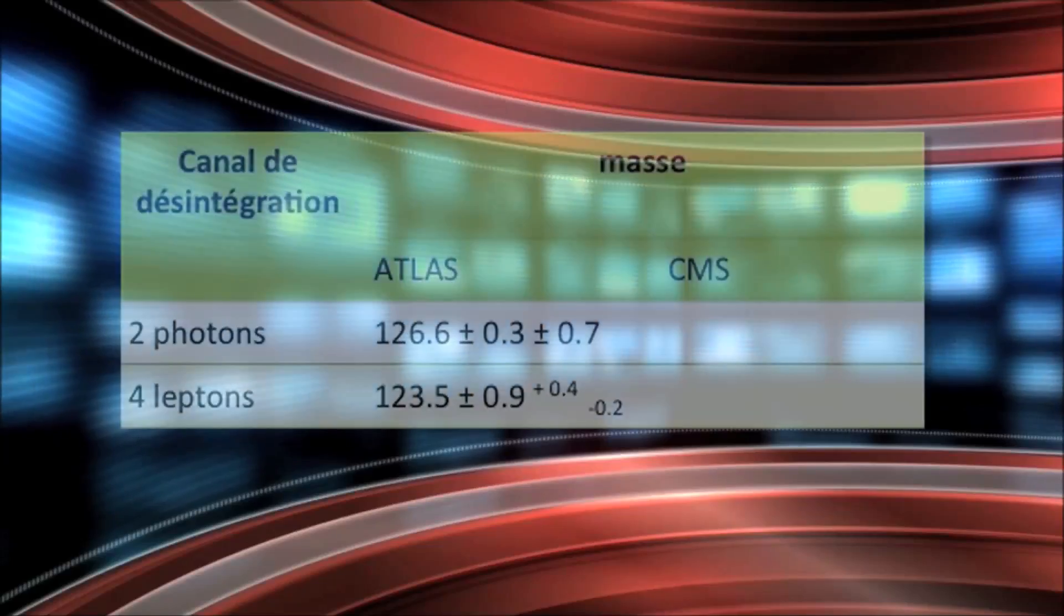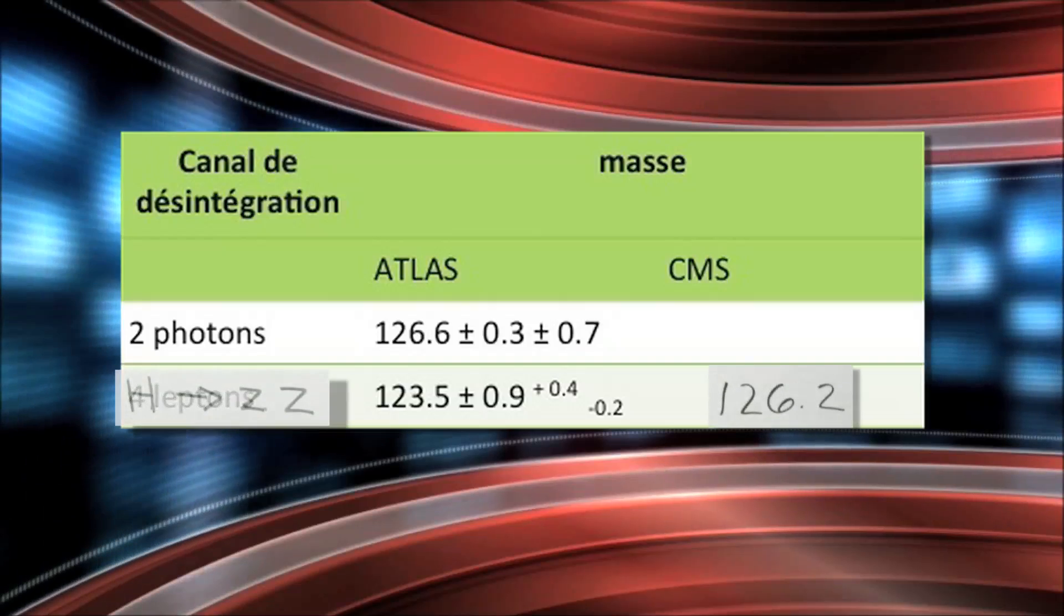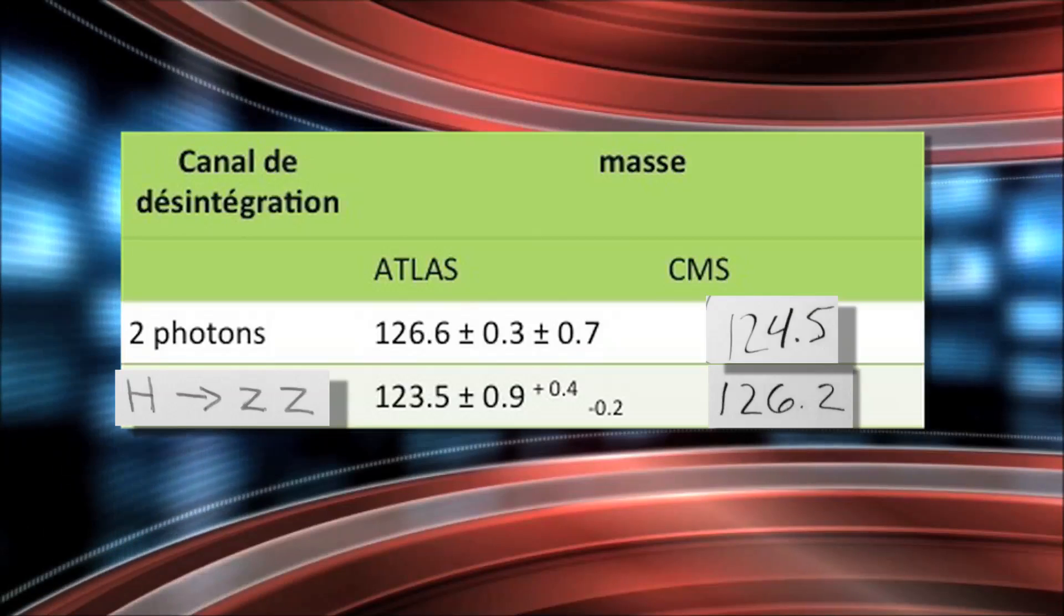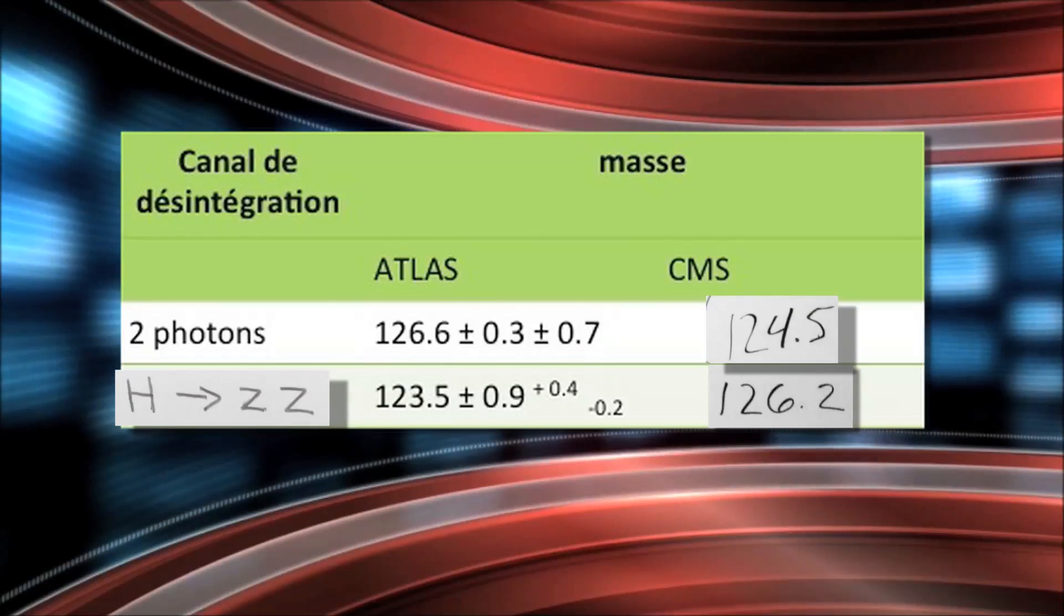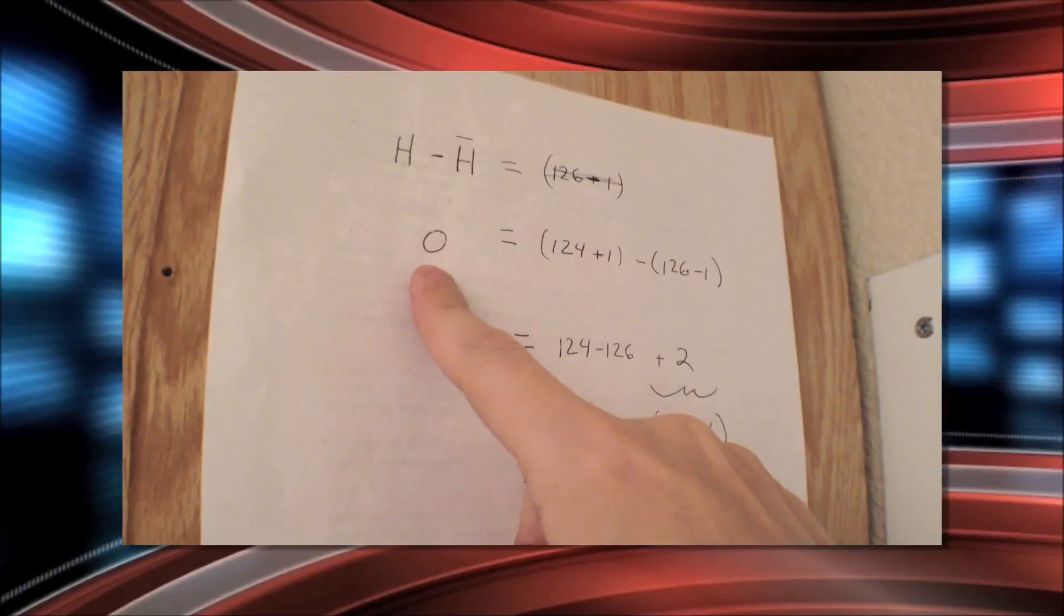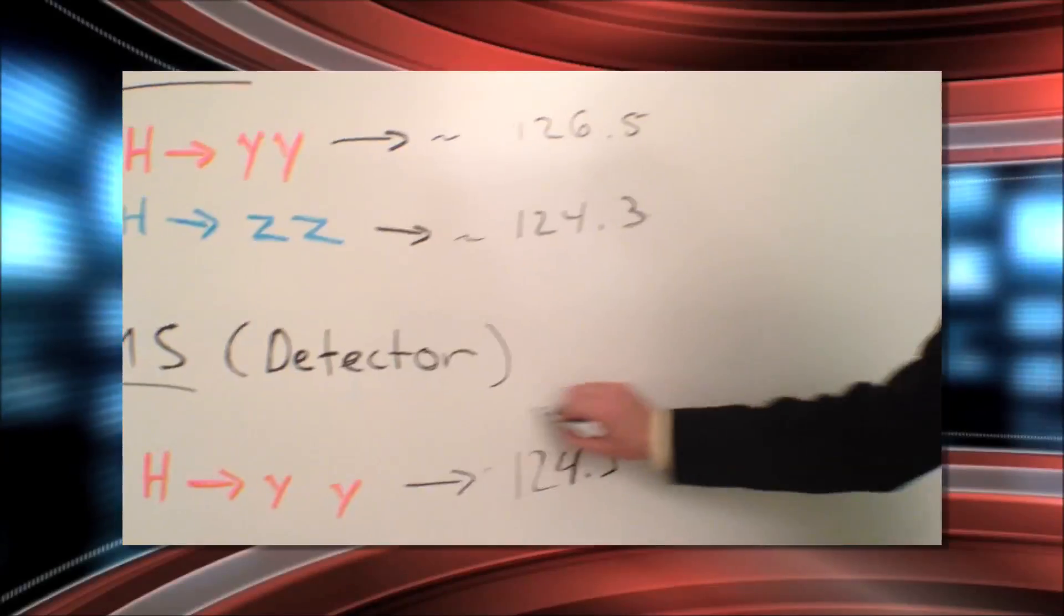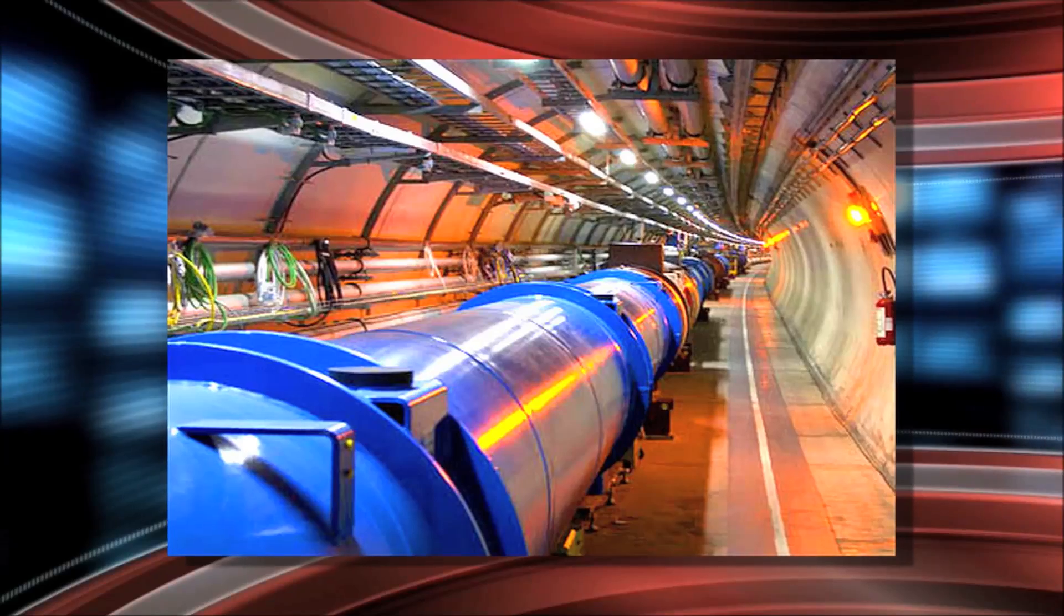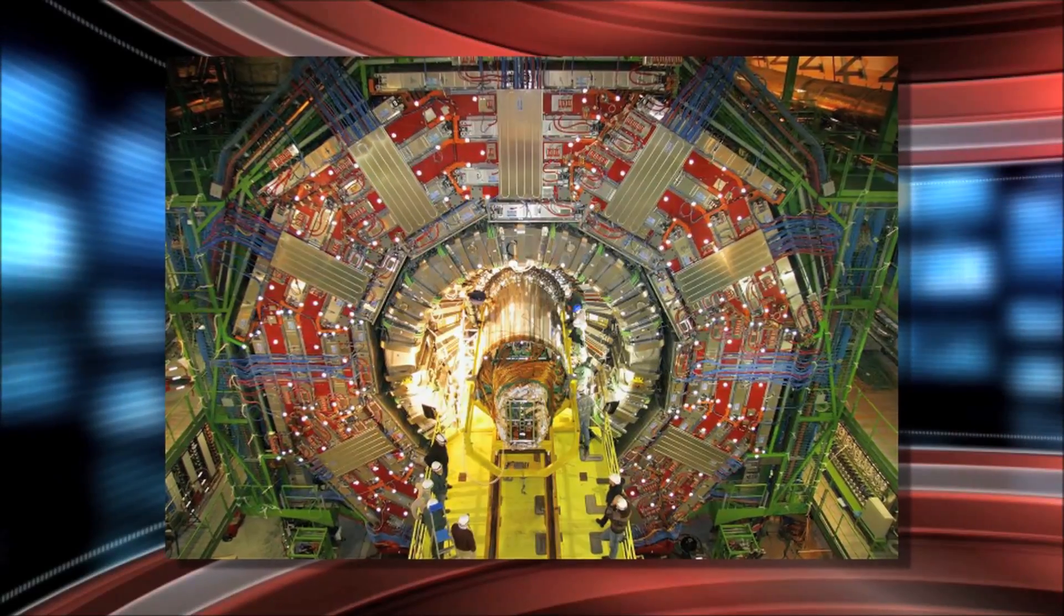If Wintz's prediction is right, the data from CMS will show a discrepancy between the ZZ channel and the gamma-gamma channel of more than one GeV. Then the Higgs paradox will be an issue stuck with physicists until 2016, when the Large Hadron Collider is back up and running again.